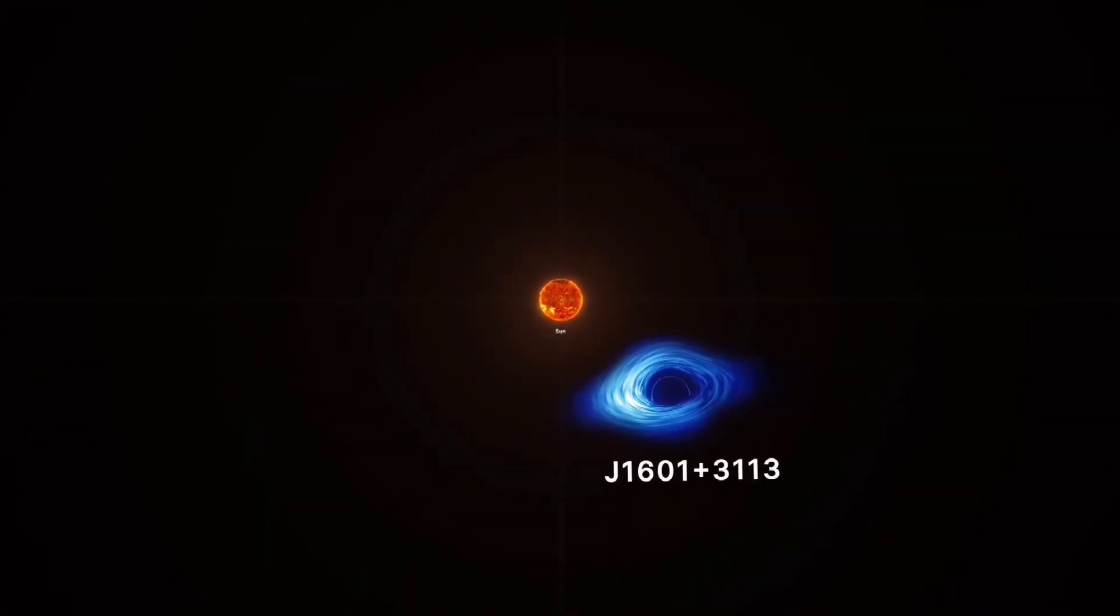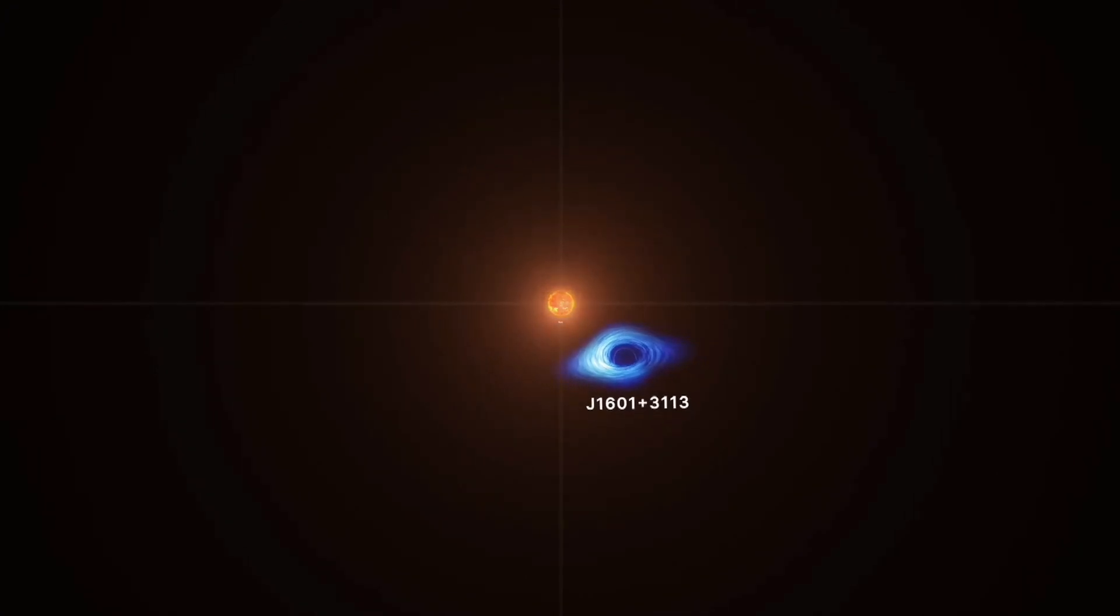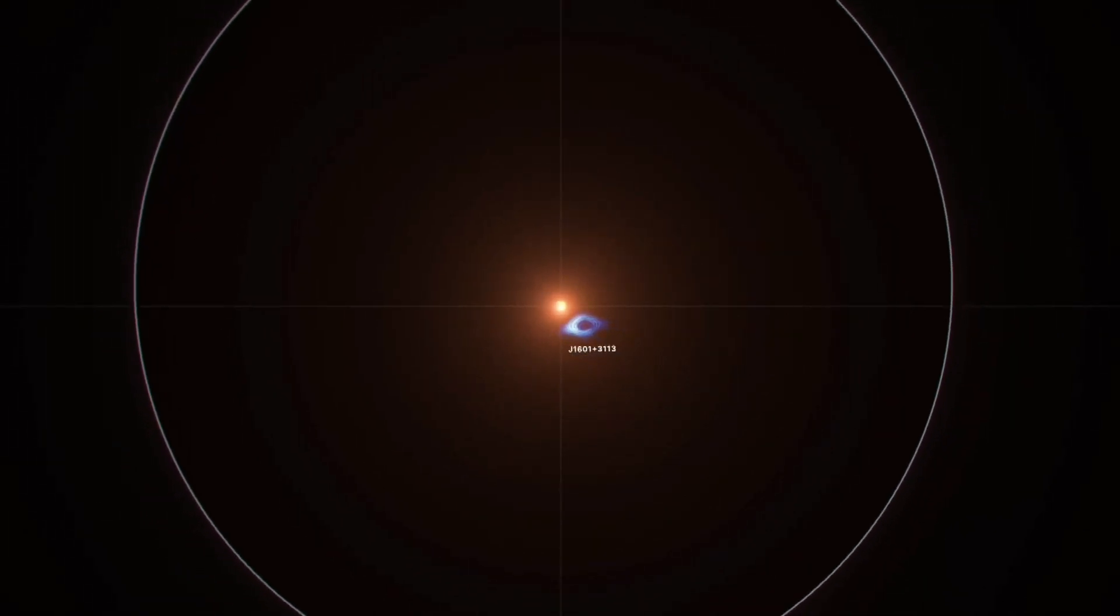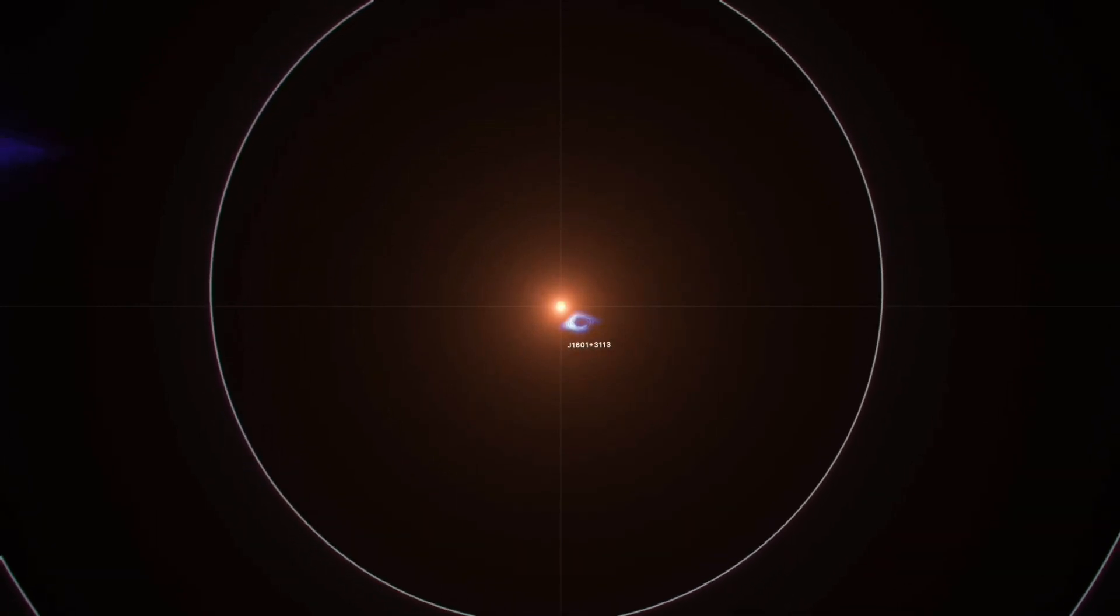The event horizon marks the point of no return for matter approaching these black holes. Any light that crosses this boundary is trapped indefinitely, while light that approaches is bent and redirected by the strong gravitational forces of the black hole, resulting in a shadow that's about twice the size of the event horizon.